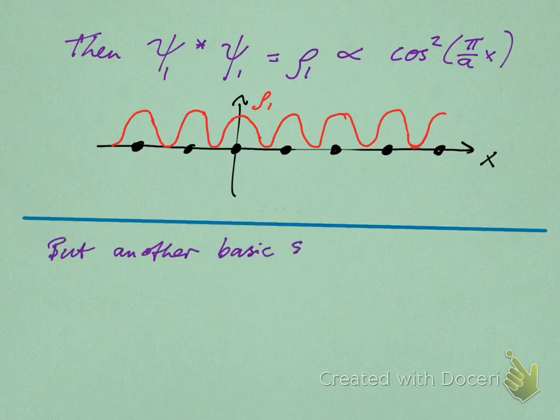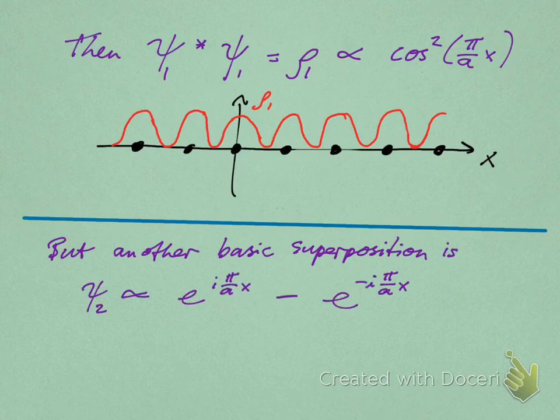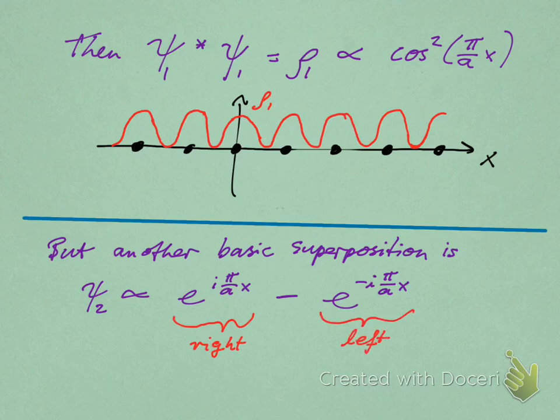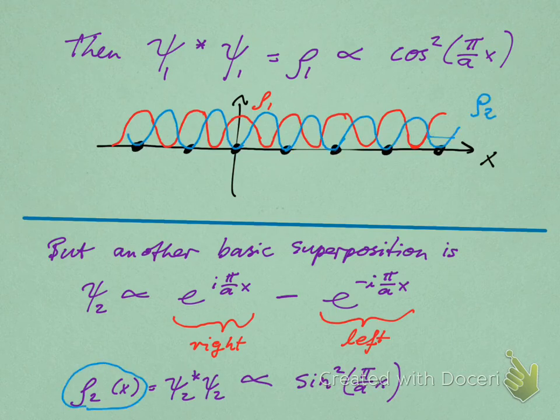Now there is another superposition that we can contemplate—another basic superposition of right and left. All I have changed here is a sign. Instead of adding the two components, we can subtract them. It's another basic superposition. In this case, though, we get ψ* ψ that is proportional to the sine squared instead of the cosine squared. When I draw that, then it looks like this. So again, we get this picture of two states. Unfortunately, now I'm calling it one and two. Before I was calling it A and B—same thing. Two states where in one state the probability density for the electron location is always maximized near an ion, and in the other state it is always maximized in between ions. So same idea.